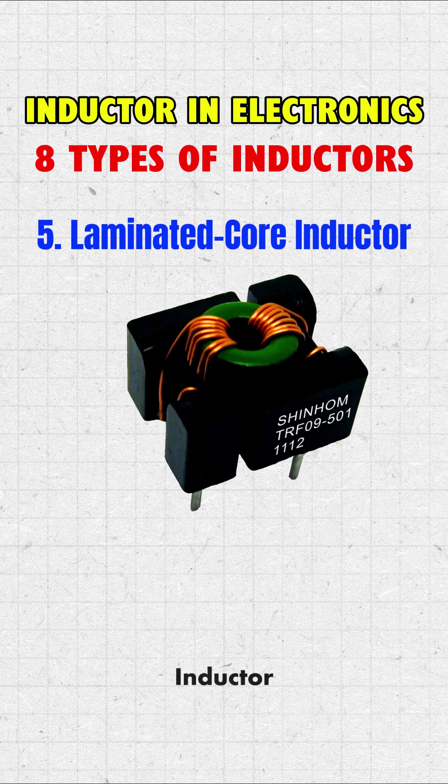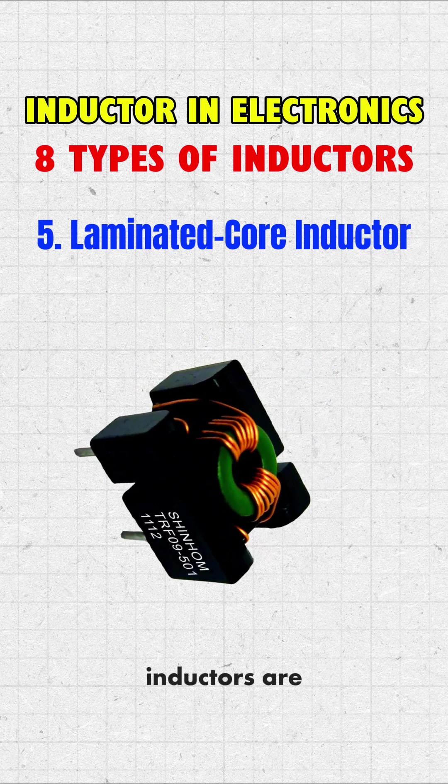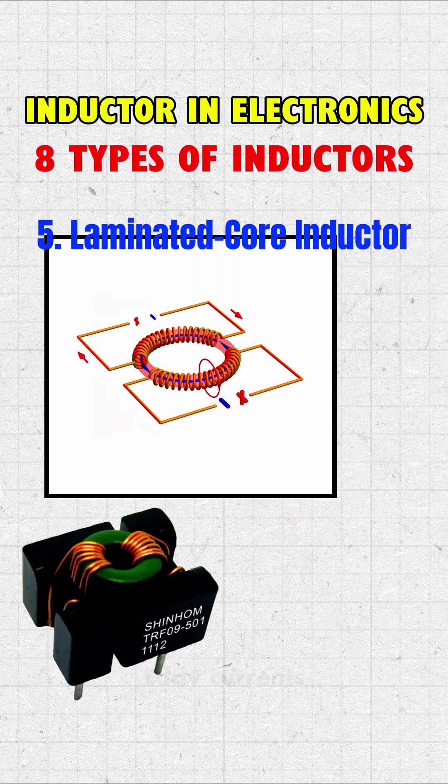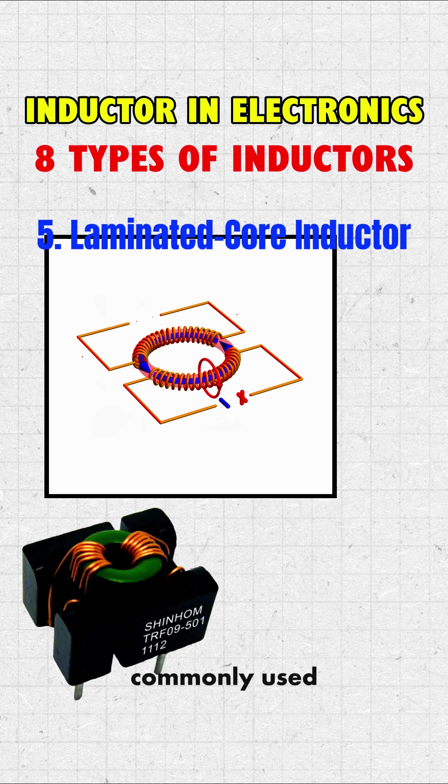5. Laminated core inductor. Laminated core inductors are made of thin metal sheets stacked together to reduce energy loss due to eddy currents. They are commonly used in power supplies and electrical transformers, where energy efficiency is important.